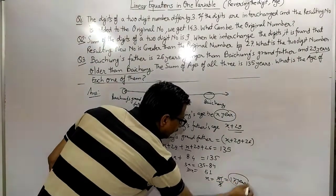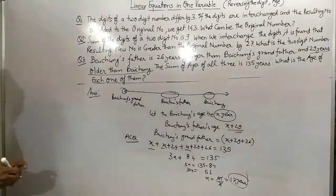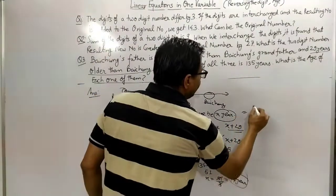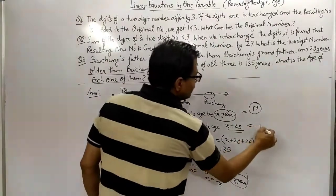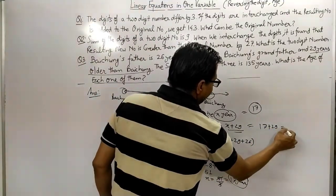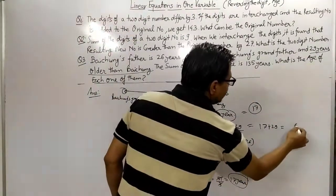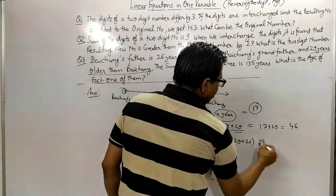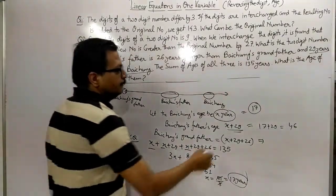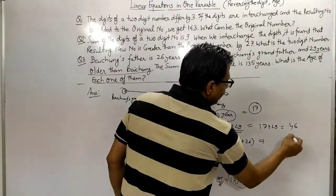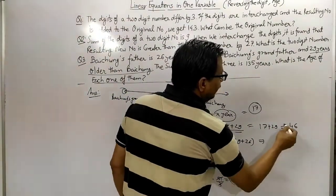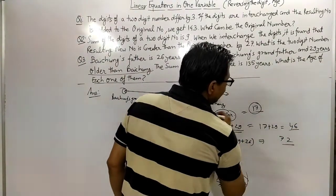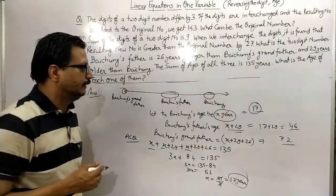So Bachum's age is 17 years. The father's age is 17 + 29 = 46 years. The grandfather's age is 46 + 26 = 72 years. These are the ages of Bachum, Bachum's father, and Bachum's grandfather respectively.